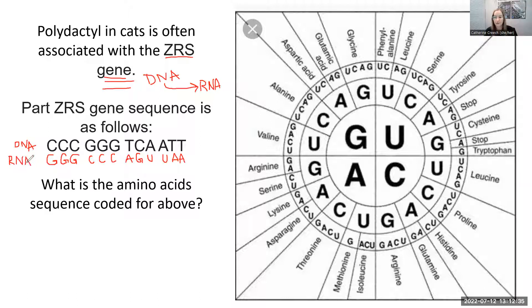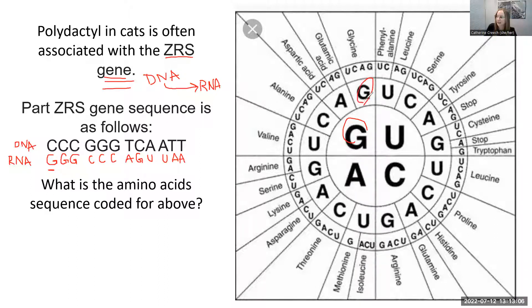Now that I have the RNA from the DNA that was my gene related to polydactyly, I can use the codon chart over here on the right to figure out the amino acid sequence. We have two main types of codon charts: the square one and the round one — I'm going to show you both. For the circular chart, we go right to the center of the bullseye and find the first nucleotide, which is G. Then we look for the second one, G, going out in the radius. The third one is also G. So the amino acid coded for by our first codon GGG is glycine.